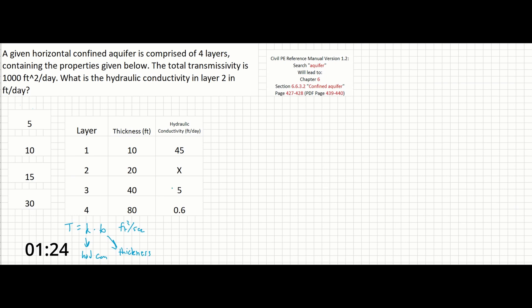So we have been given the total transmissivity, so all we have to do is subtract the transmissivity of the known layers to isolate the unknown layer, then divide by the layer thickness to find the hydraulic conductivity. So let's get started.